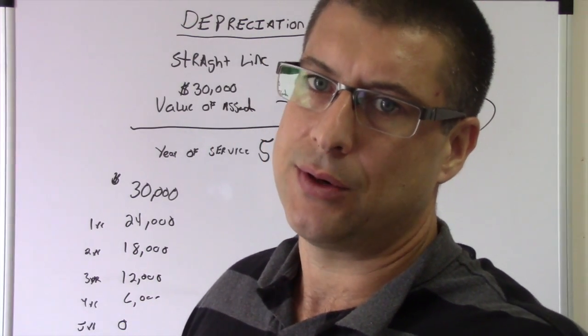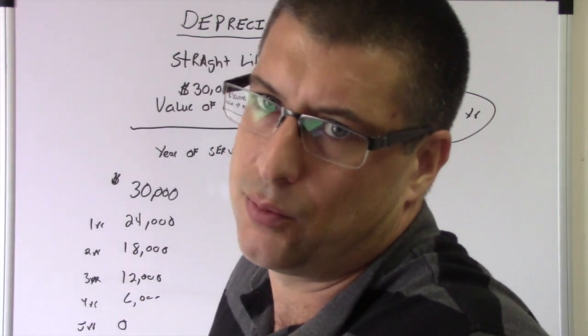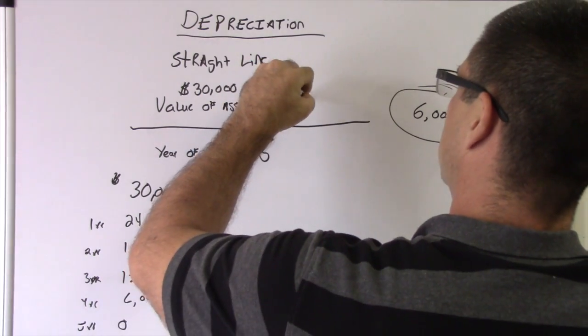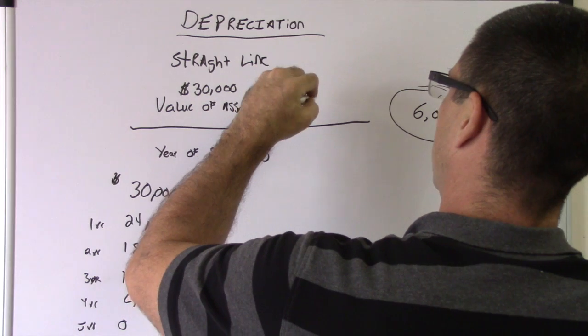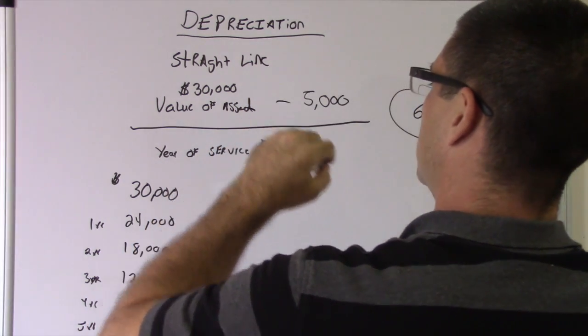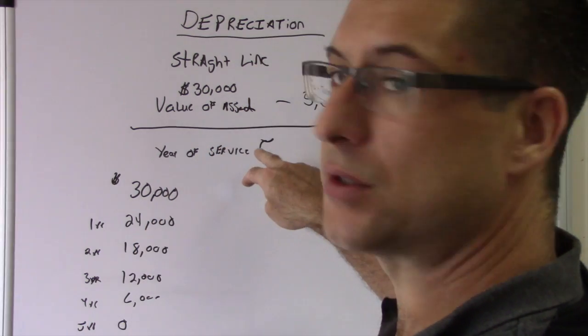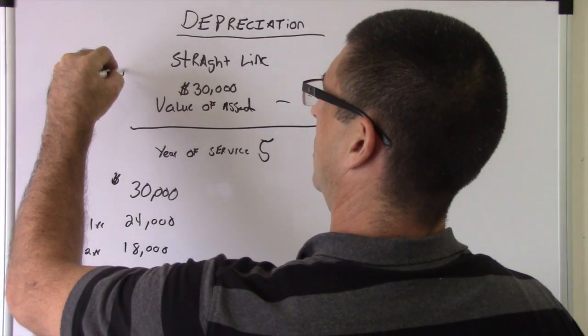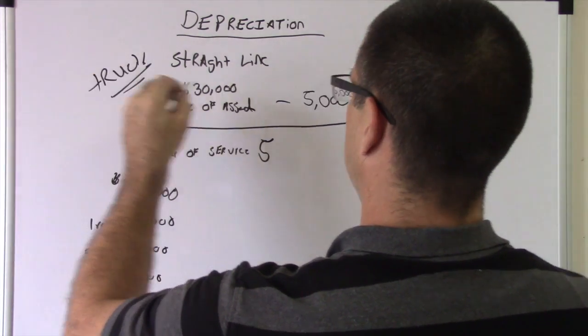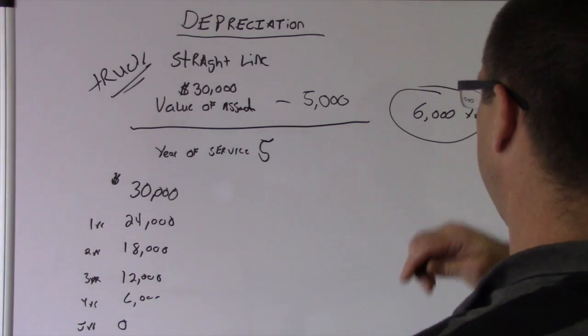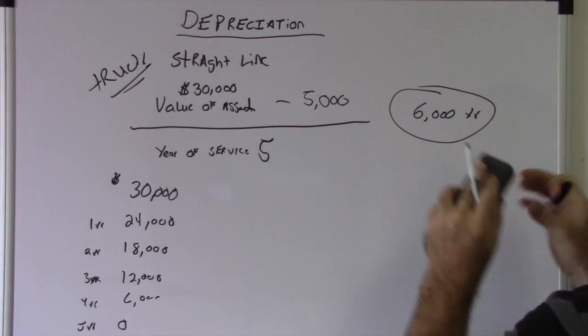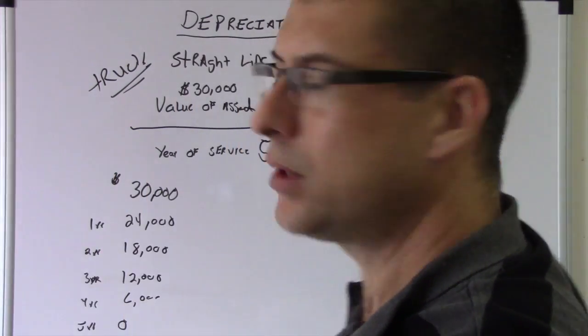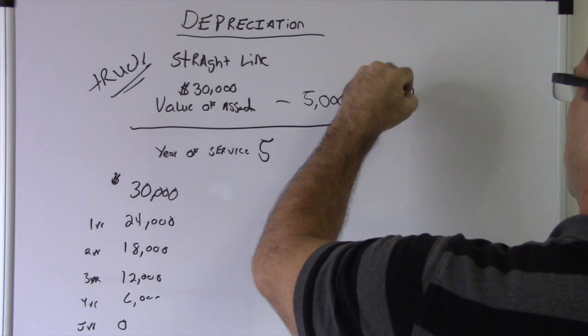So I guess we'll do that. We're going to say salvage value is $5,000. So after the five years, your truck is going to be worth $5,000. That just means that you would—$30,000 minus $5,000 is $25,000 divided by five.